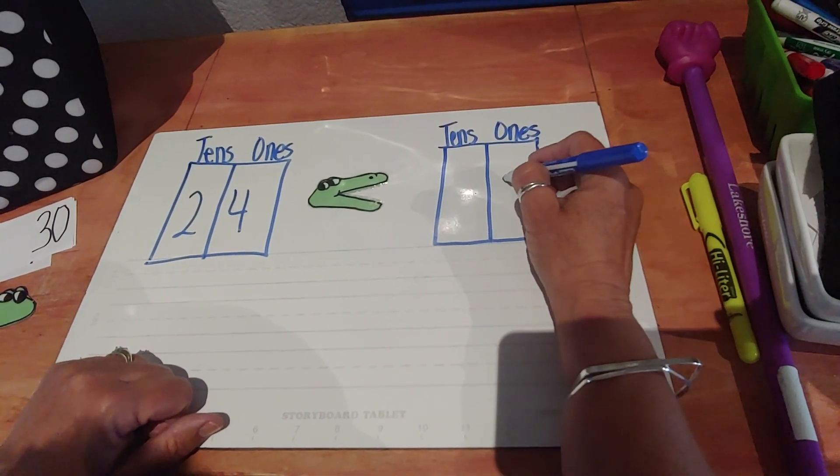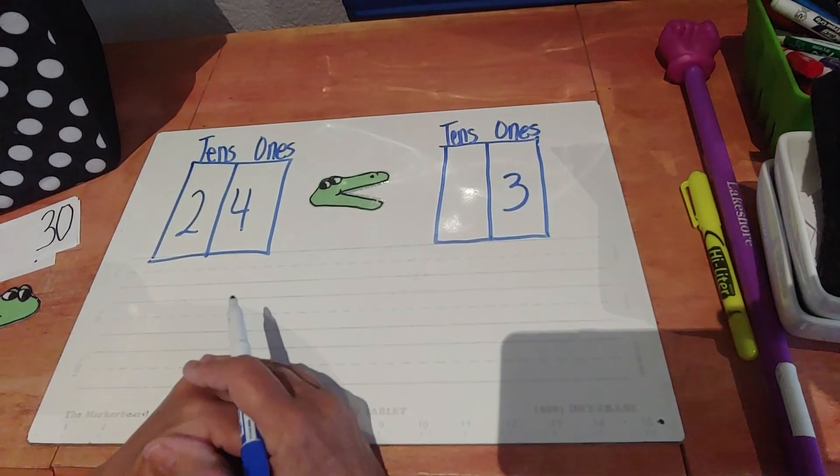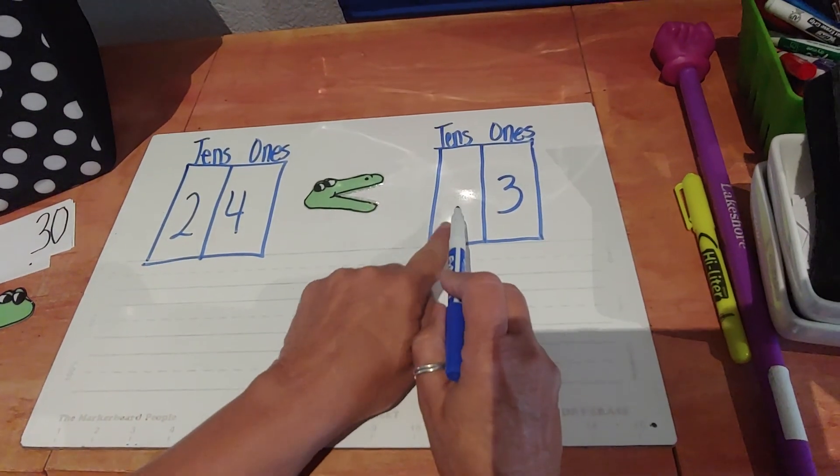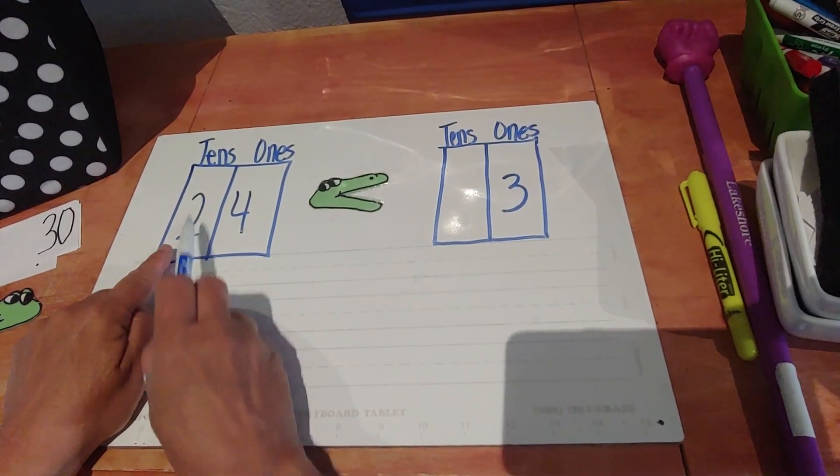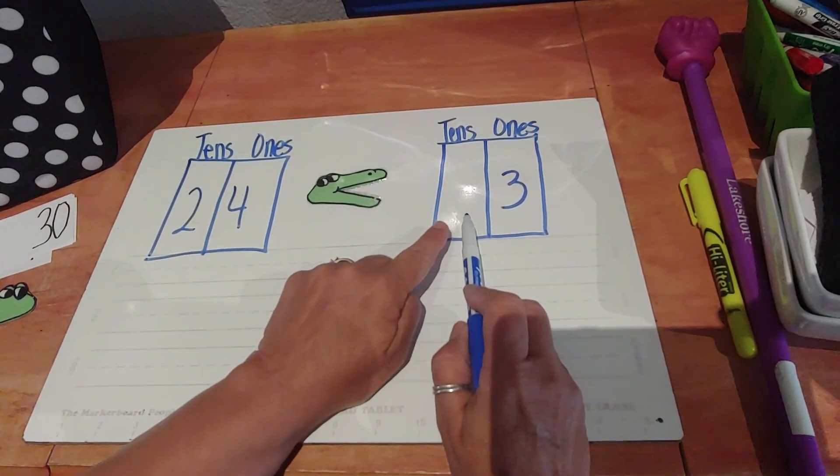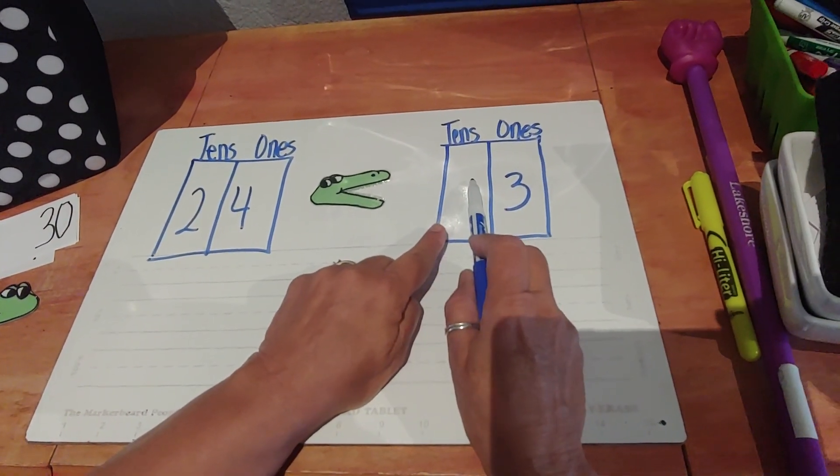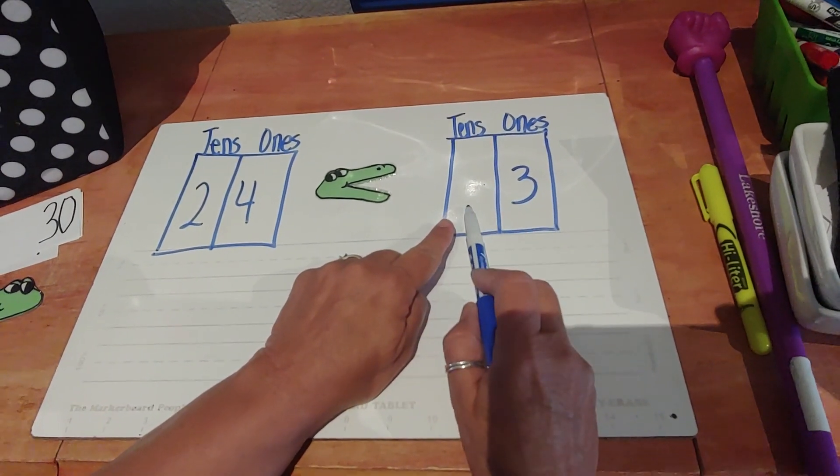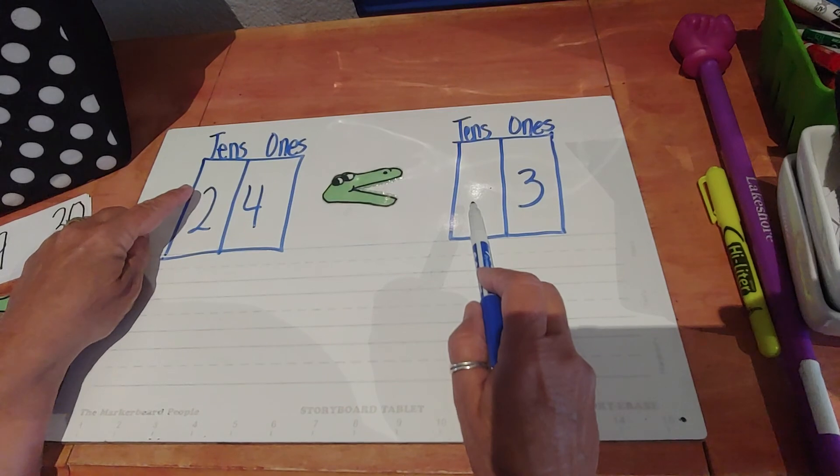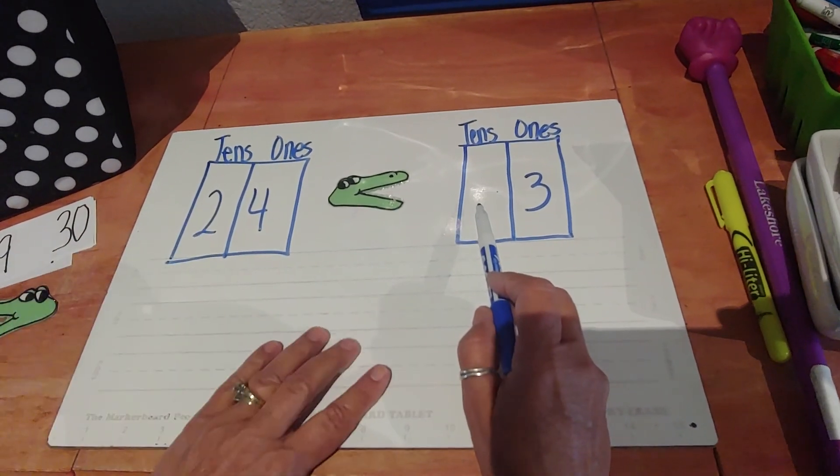So this box over here has to be greater than that box because it reads 24 is less than what? They give us the number three. So it has to be greater. So the tens has to be greater than the tens in this number. And we have two tens. So can we put a zero? No, because that would only be three. Can we put one ten and three ones? Well, one ten is not more than two tens.